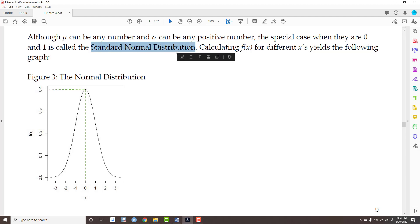Now calculating f(x) for different x's yields the following graph. Here, so that's the standard normal distribution. The standard deviation is 1 and the mean is 0. As can be seen here, the top of the curve is always above the mean.